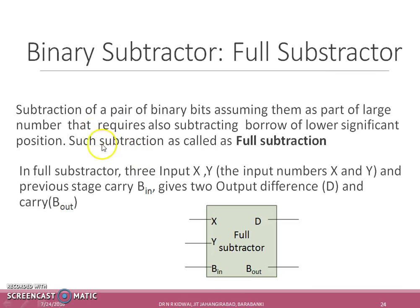Thus, full subtraction can be explained as subtraction of a pair of binary bits, assuming them as part of a large number that requires also subtracting borrow of lower significant position. In full subtractors, there are three inputs: X and Y where X minus Y has to be affected, and previous stage carry B_in, giving two outputs: difference D and borrow B_out.